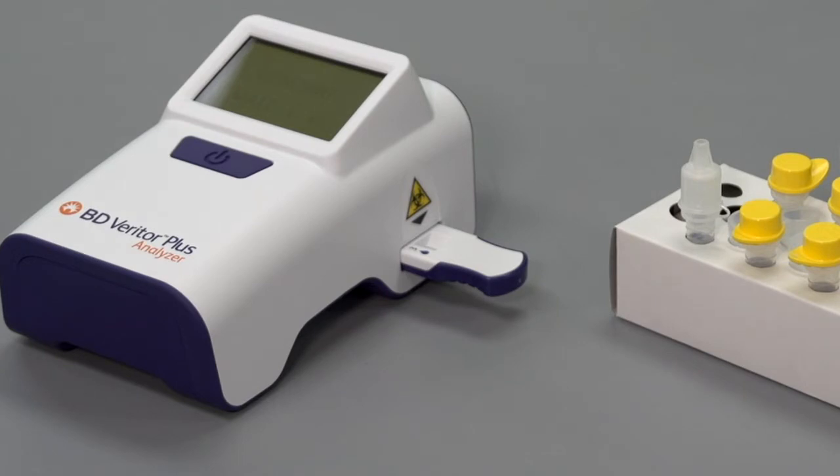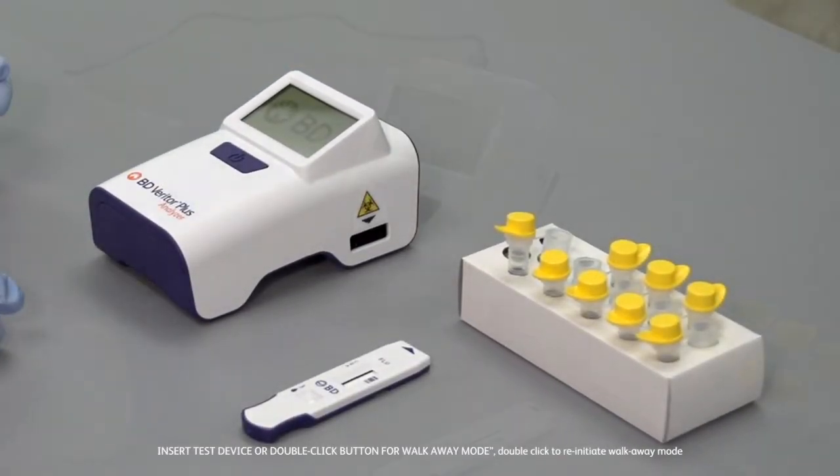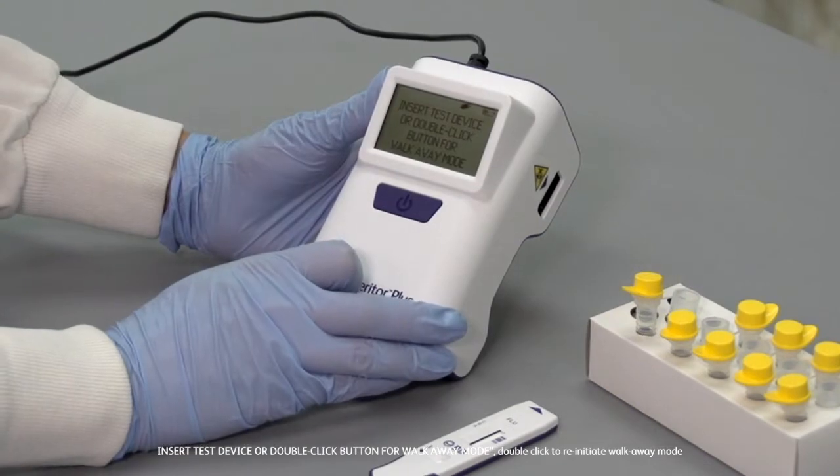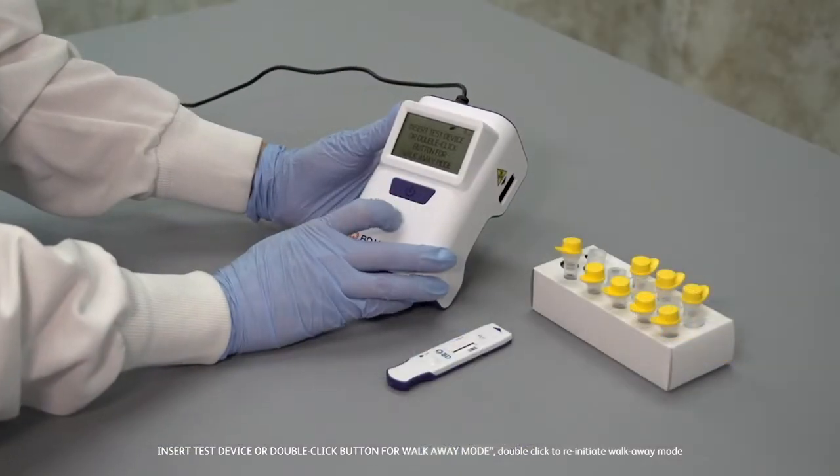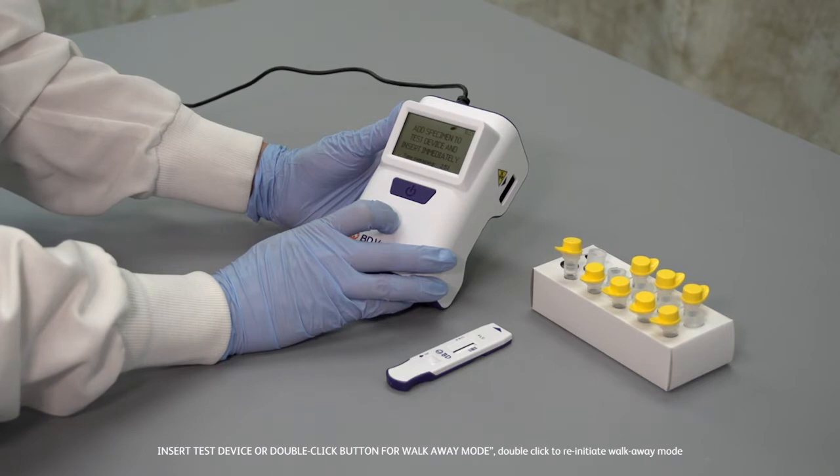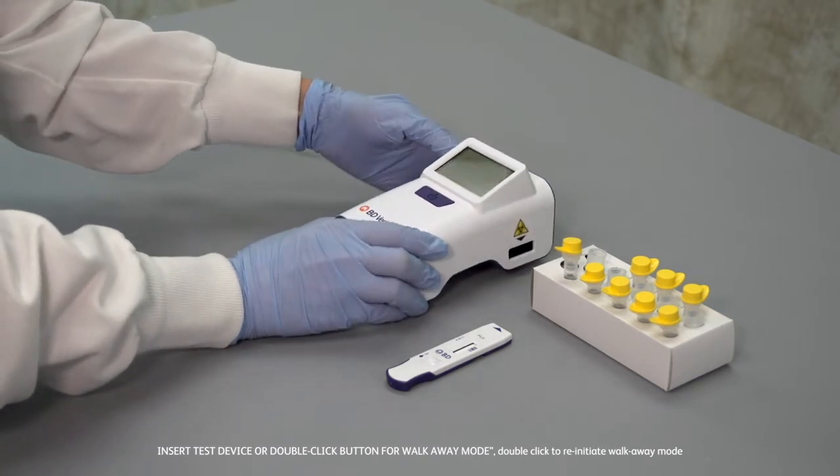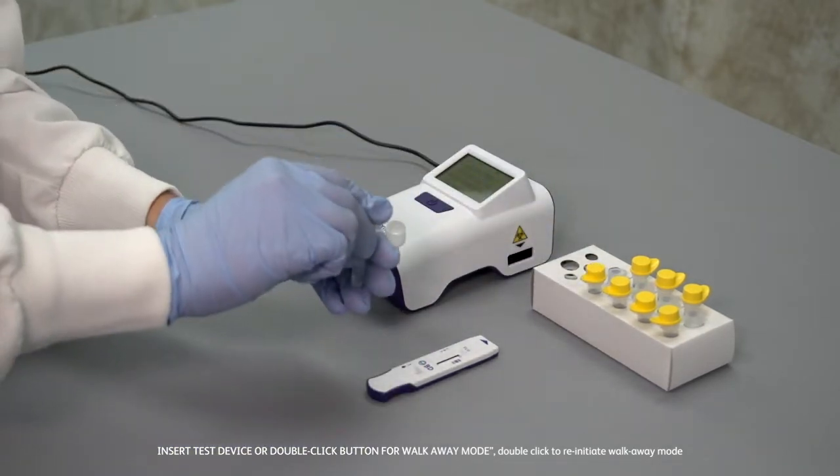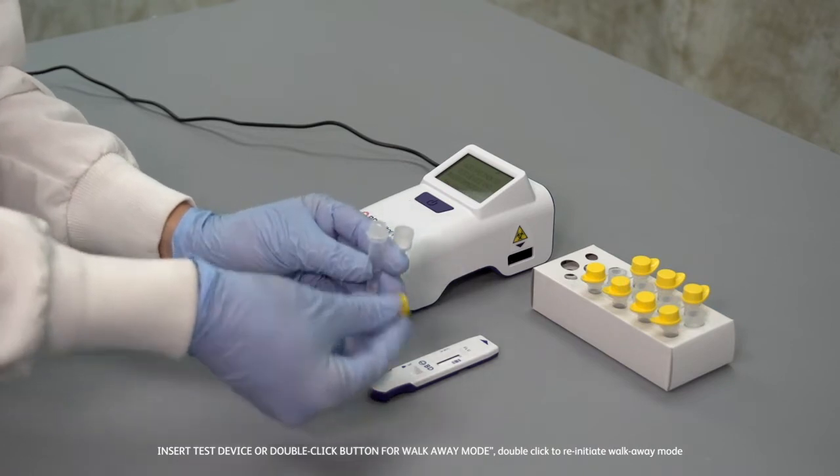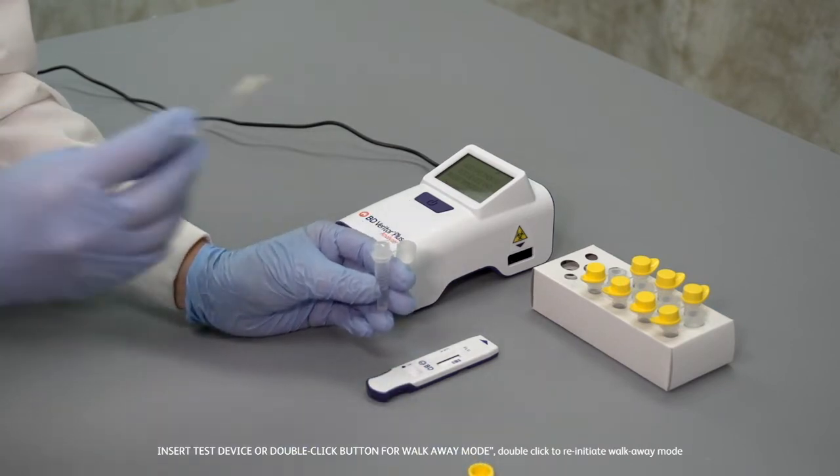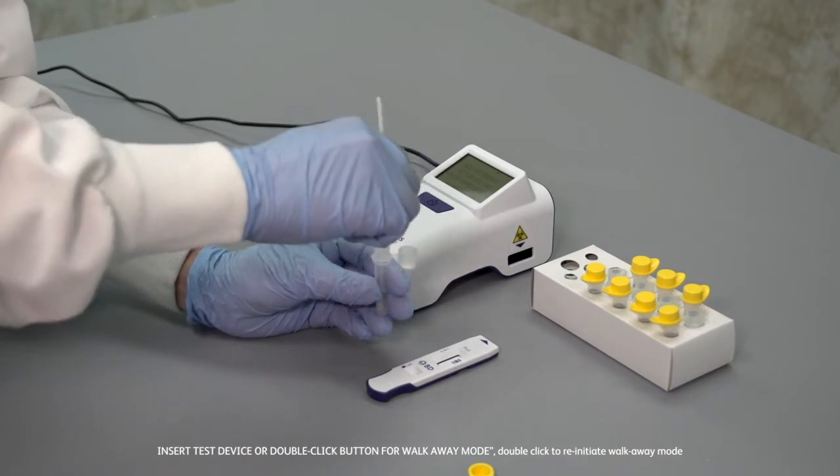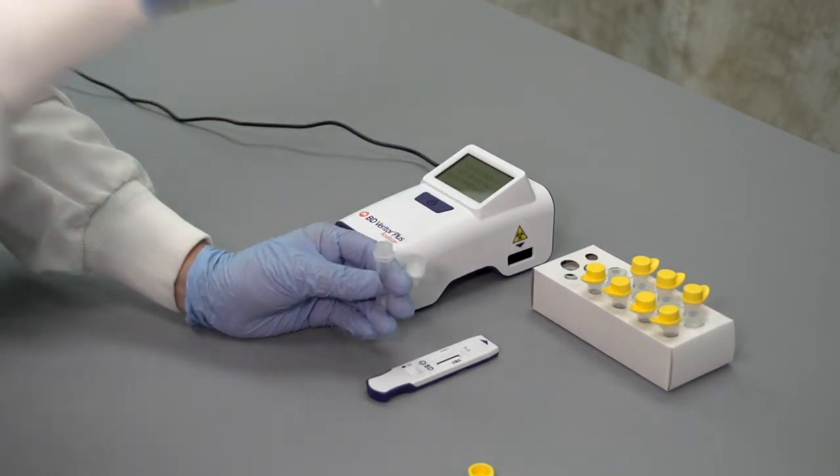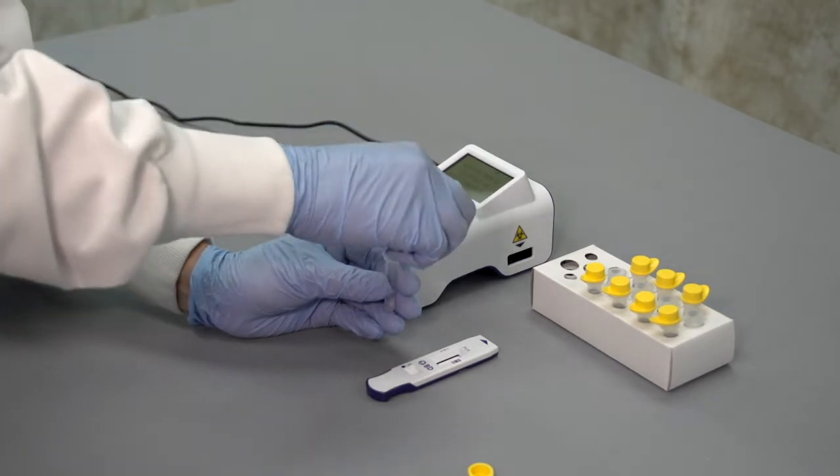Now, we'll do a simulated walk-away test. Power on the analyzer. When Insert Test Device or Double-Click button for walk-away mode appears in the display window, double-click the Power button. You'll be reminded to connect the external power if the analyzer is not already plugged in. This is a requirement for walk-away mode. Make sure the instrument is resting on a level surface. A three-minute countdown timer will be displayed on the LCD screen indicating the time available to prepare the patient sample. The test device may be inserted any time during these three minutes.